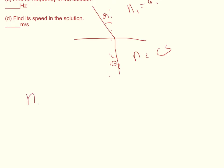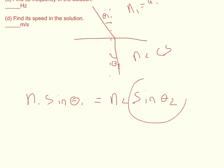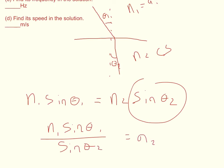So N1 sine theta 1 is equal to N2 sine theta 2, and it's simply a matter of dividing by the sine of theta 2. So N1 sine theta 1 over sine theta 2 is equal to N2.